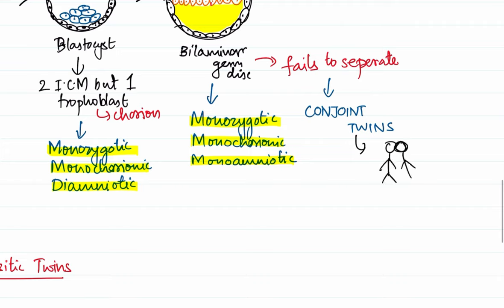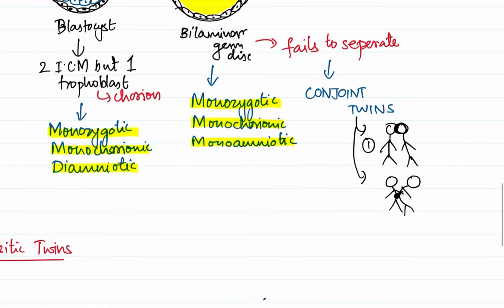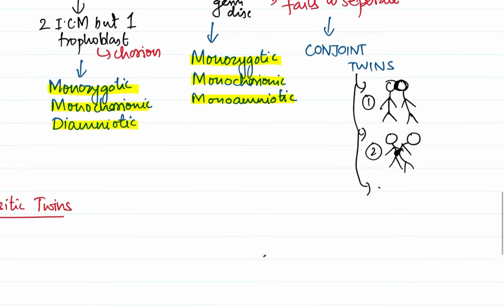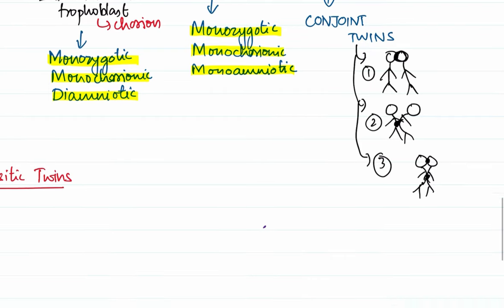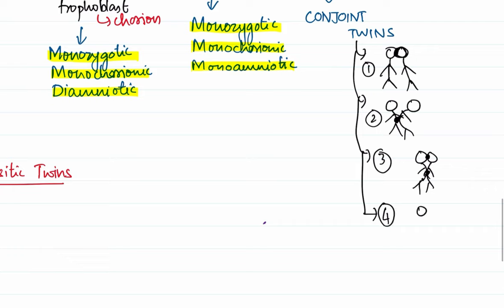Depending upon which location the bilaminar disc is not separated, conjoined twins could be of four types. First, the bilaminar disc may be separated in all regions except at the head region. Second, at the thoracic region the bilaminar disc may remain attached whereas separated at other regions. Third, both the head and thoracic regions are fused together. And finally, the bilaminar disc may fail to separate at the sacrococcygeal region. These are the four types of conjoined twins.